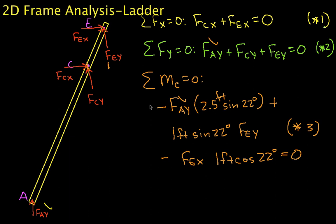Welcome to Part 2 of this video on the analysis of a ladder in two dimensions. In Part 1, we did a free body diagram of the entire ladder, and then we did a free body diagram of the left leg of the ladder and came up with the three equations that you see here.